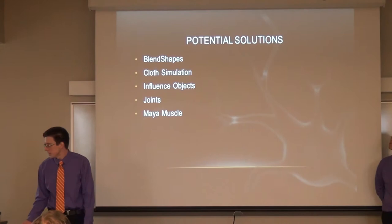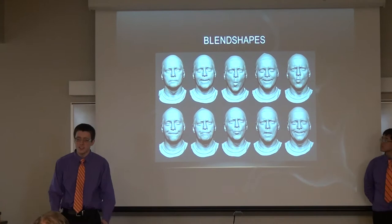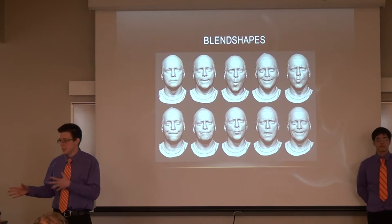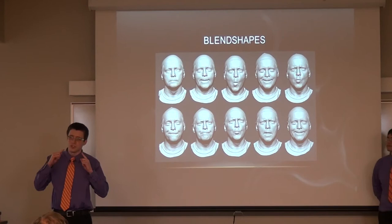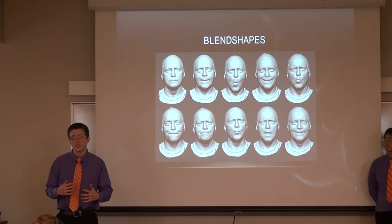Potential solutions we considered were: blend shapes, cloth simulation, influence objects, joints, and Maya Muscle. Blend shapes are essentially target points that a mesh would deform towards — you have start and end points. People tend to use these more for facial animation because you're only going to certain target points. They don't really interact with each other; they just displace things based on the level of rendering influence, adding displacement values for each individual vertex.